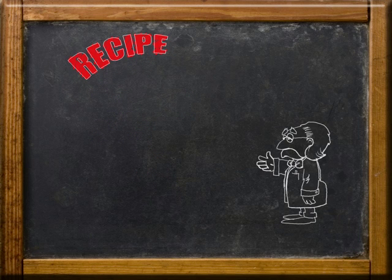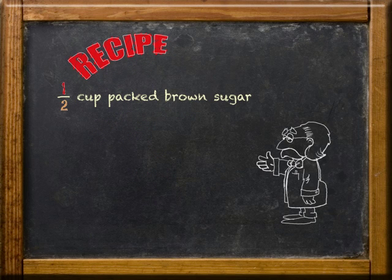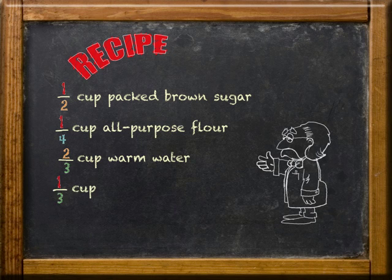We have one-half cup packed brown sugar, one-fourth cup all-purpose flour, two-thirds cup warm water, one-third cup butter, three-quarter cup granulated sugar.